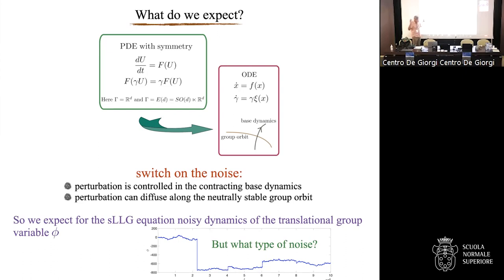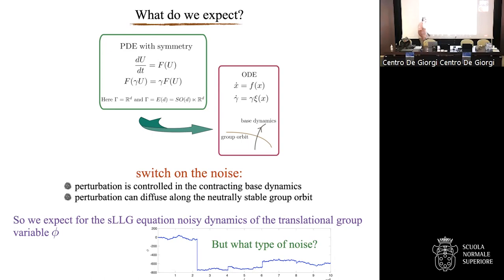If we switch on the noise, intuitively — though I don't have rigorous theory — the spatial dynamics, being contracting, is controlled, so the front solution keeps its shape more or less. But along the group orbit, which is neutral, the noise can diffuse and you can have a non-trivial stochastic process along the group orbit. For the SLLG equation with translational invariance, we expect the front interface to undergo some stochastic process — but the question is what type of noise.